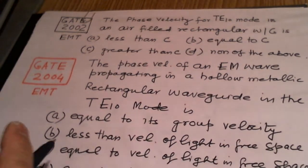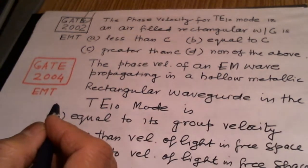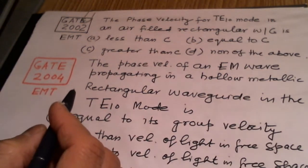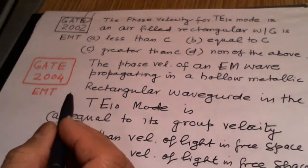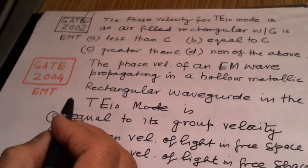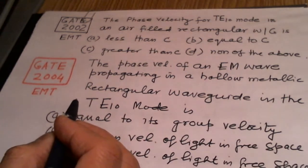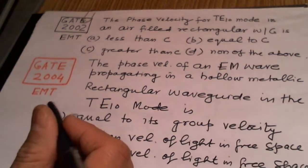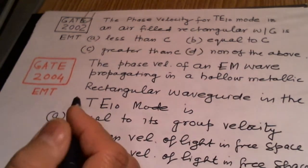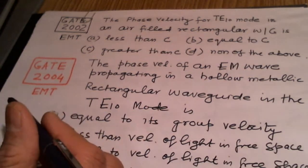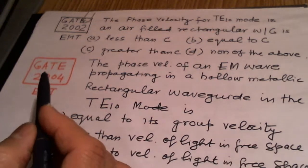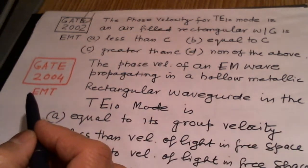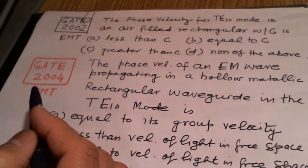Here we are trying to discuss the problems of GATE in the area of electromagnetics, especially dealing with the area of waveguide propagation. There have been three problems which have come so far, related to the phase velocity and group velocities on these waveguides.